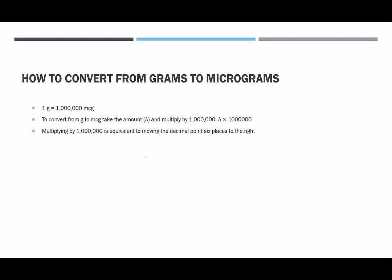So if we have 120 grams and we want to convert it to micrograms, we would multiply by one million, which is moving the decimal point six places to the right. The decimal point is currently behind that last zero — moving it six places to the right, one, two, three, four, five, six — we would have to add some zeros here. We would end up with 120 million. So all of these numbers end up being seemingly very large because the unit is so small.